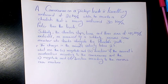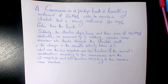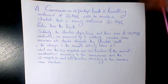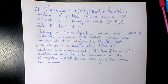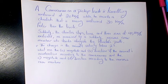The cheetah is moving westward at 30 kilometers per hour faster than the truck. Suddenly the cheetah stops, turns, and then runs at 45 kilometers per hour eastward, as measured by a suddenly nervous crew member who stands alongside the cheetah's path. The change in the animal's velocity takes two seconds.